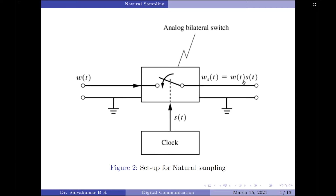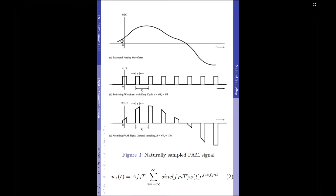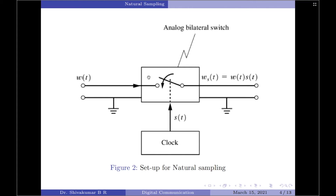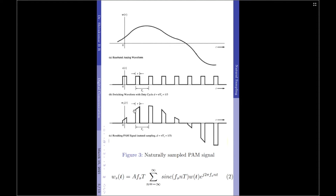This produces samples of the analog signal as shown. We have the input signal W(t) and the control signal, a pulse train that controls the switch. Whenever the switch is closed, we obtain a rectangular pulse. The signal appears at the output only for a duration of capital T, which is the width of each rectangular pulse in the control signal s(t). When the switch is closed for the duration of each pulse, the message signal is allowed to pass through to the output. Performing this operation at repeated intervals gives a naturally sampled signal whose amplitude matches that of the input signal — this is the characteristic of natural sampling.